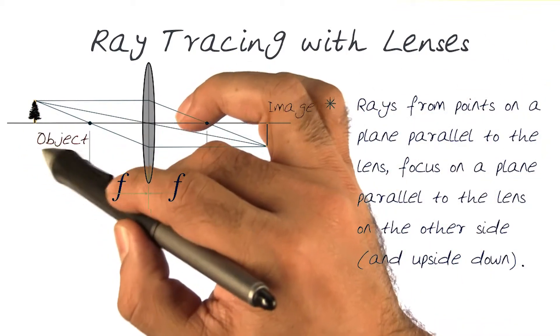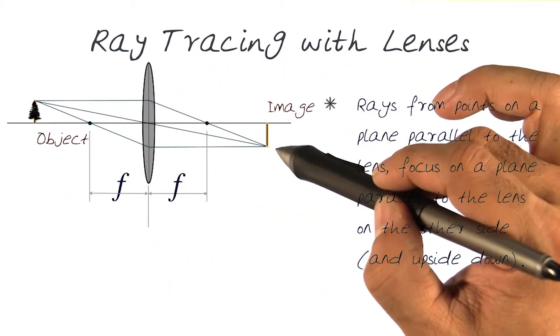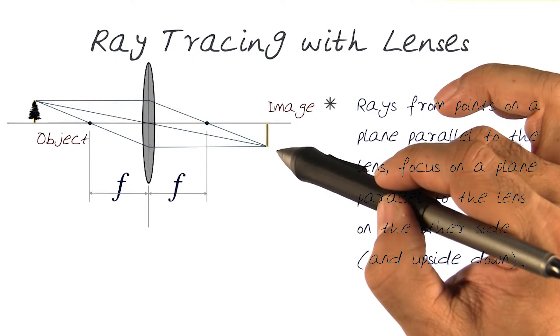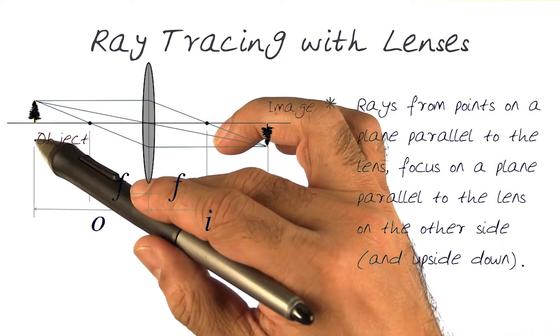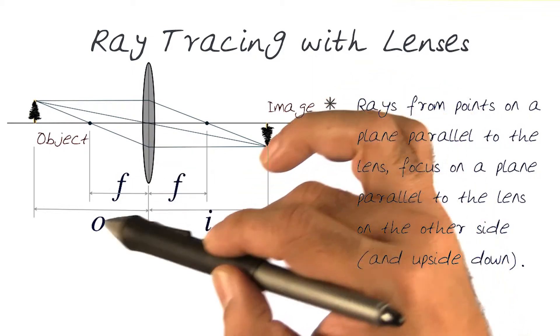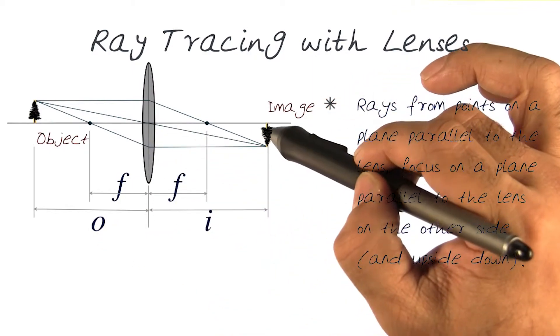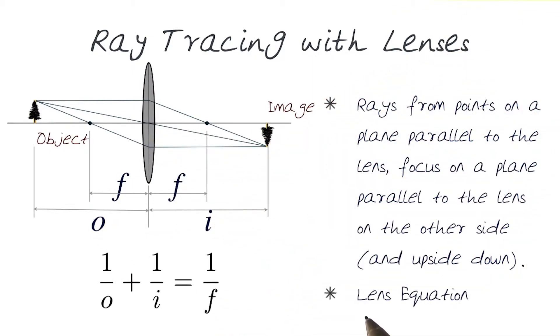So here, of course, would be my tree again. As we've noticed on the other side, it will be formed upside down. And again, just calling this distance of the object from the lens itself to be O, and the distance to the image as I. So this is what is referred to as a lens equation.